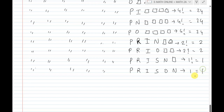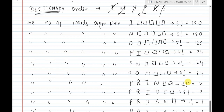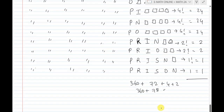So the final calculation: 120 plus 24, plus smaller values — 2, 1, 1 — totaling: 120 + 24 + 6 + 2 + 1 = adjusted sum. Adding: 360 + 78 = 438. The rank of the word PRISON is 438.